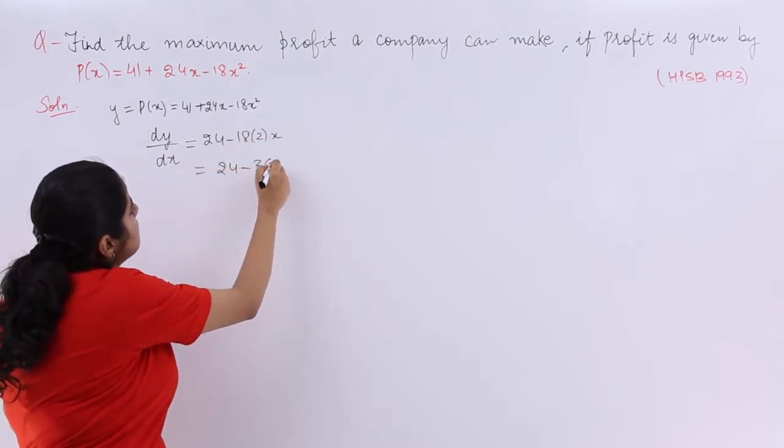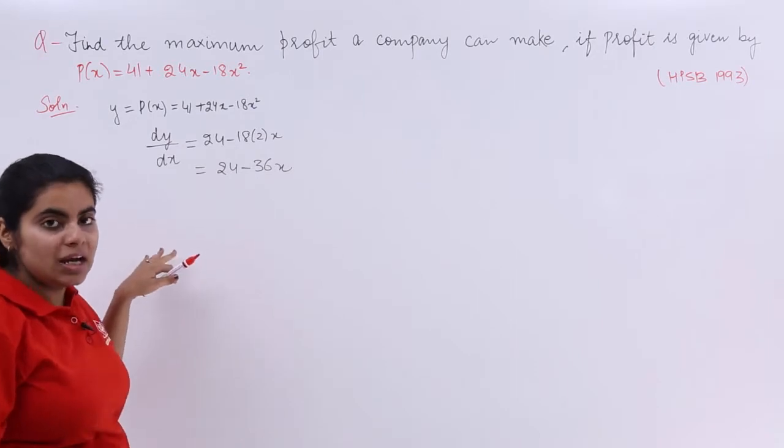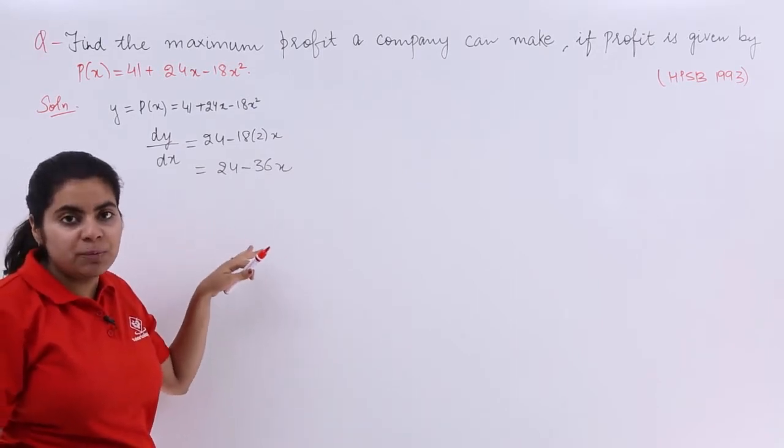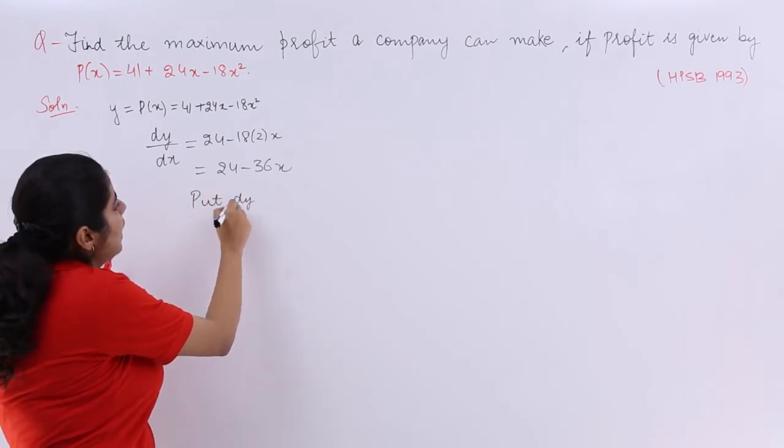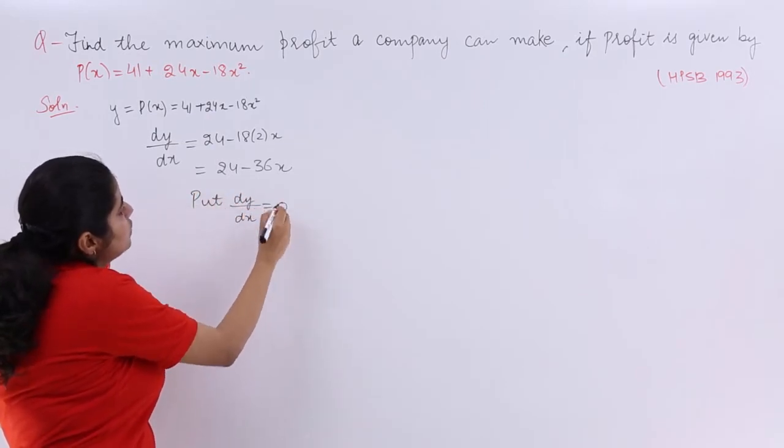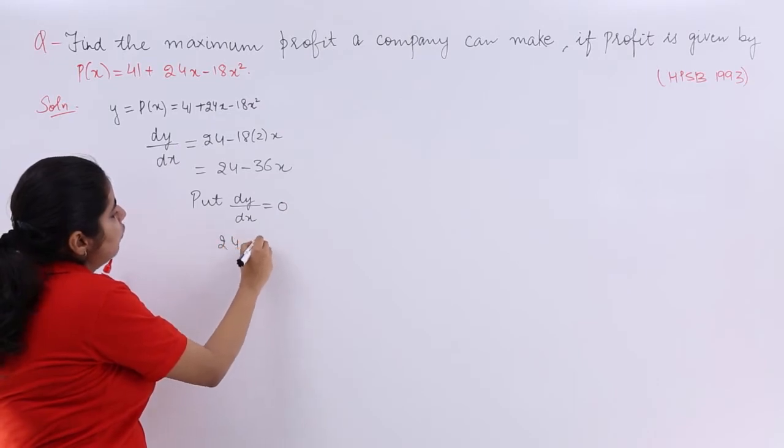And now for critical points, for stationary points or for turning points, my first derivative should be 0. So put dy/dx = 0. So what is it? It is 24 = 36x.